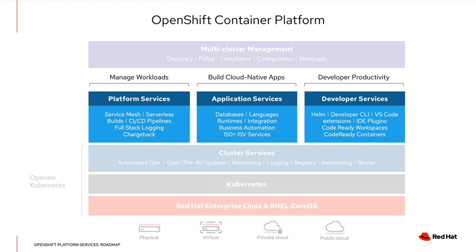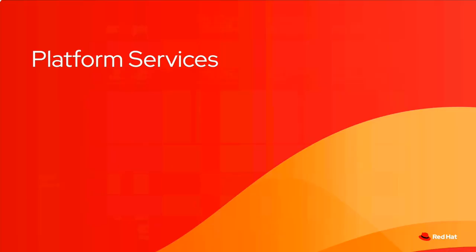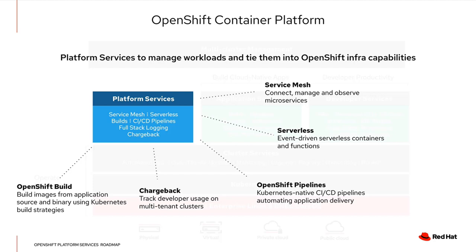That innovation is baked into every layer of OpenShift and it forms a holistic platform for running your hybrid cloud. Today we're going to focus on the cluster services — the blue boxes — that enable your development teams to write code, ship software, and manage their application stacks. The application stack is born in a cloud-native world. Tools like Istio, Knative, and Tekton empower your applications to take advantage of new automation that the infrastructure can provide, alongside tools like Eclipse Che, Quarkus, and the operator framework.